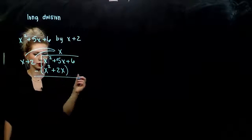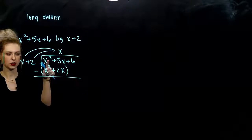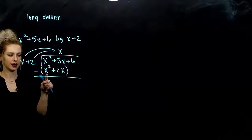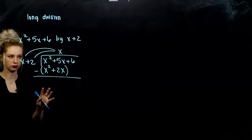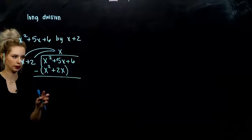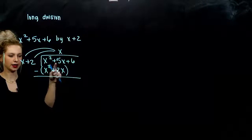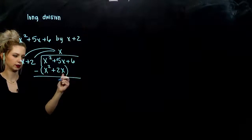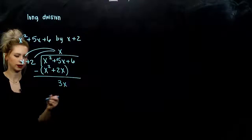We write those below under their respective terms, and we subtract that whole entire quantity from what's above. x squared minus x squared — those are gone. That was the whole purpose. And 5x minus 2x — we're left with 3x.